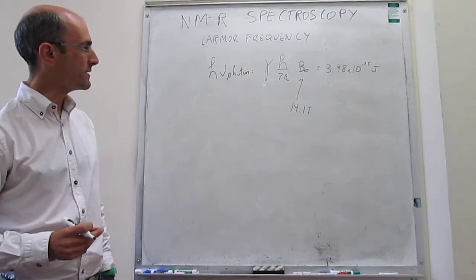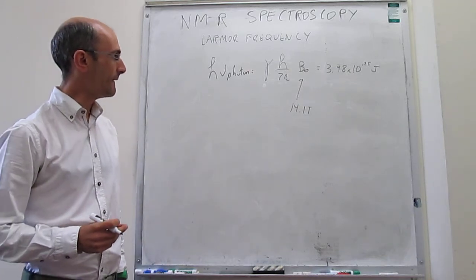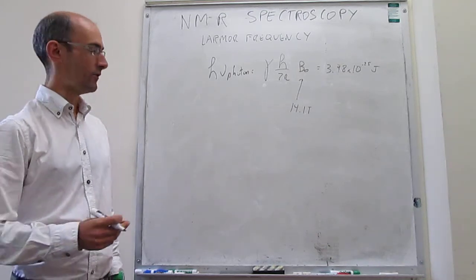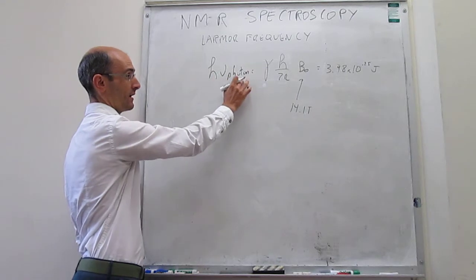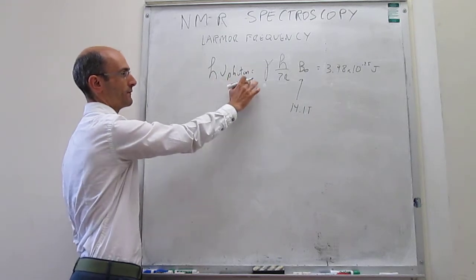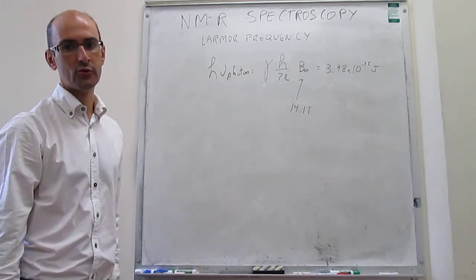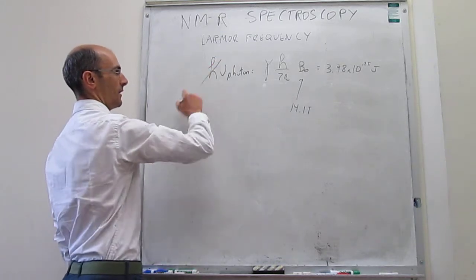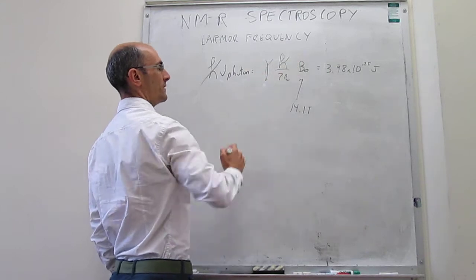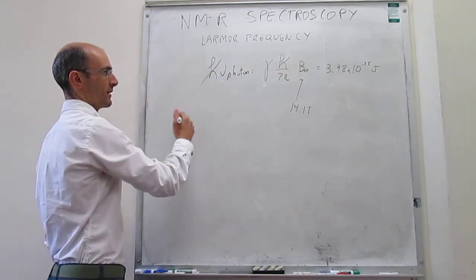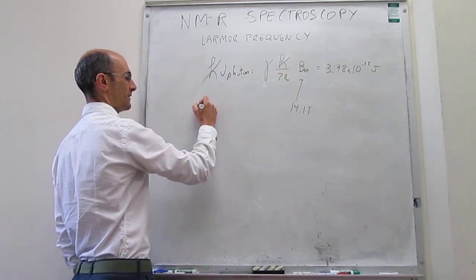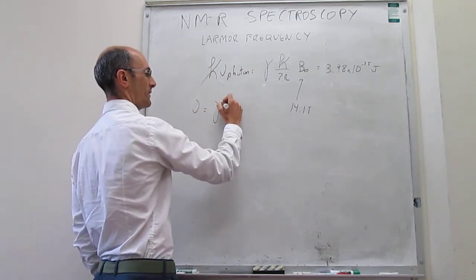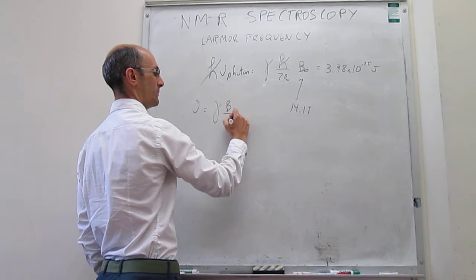Something interesting to calculate is the frequency of the photon that you need to shine in order to carry out this spectroscopy. Canceling out Planck's constants, you get that the frequency you need is equal to γB₀ over 2π.